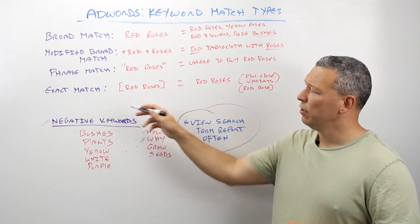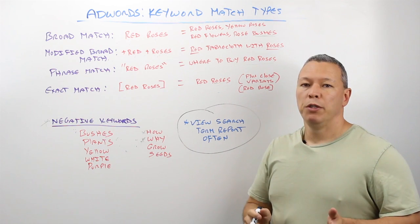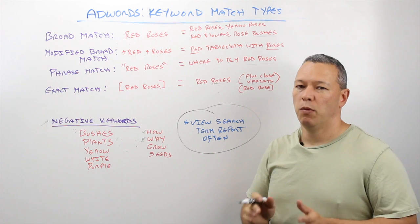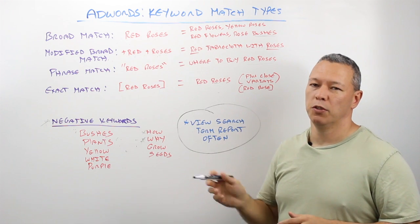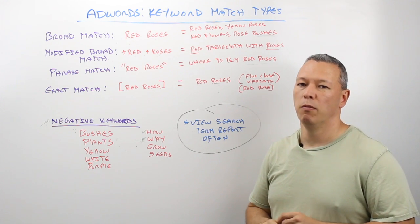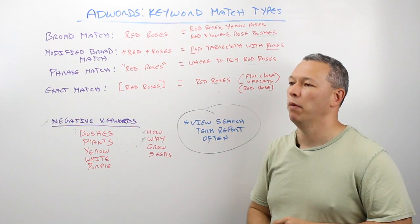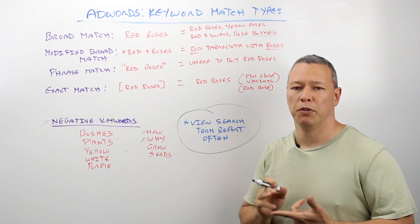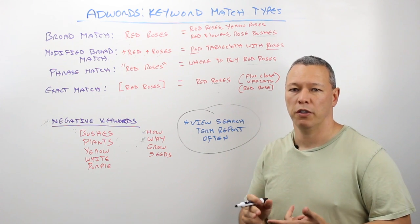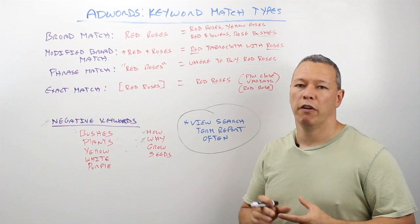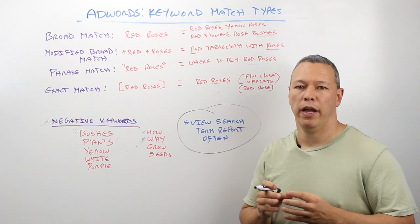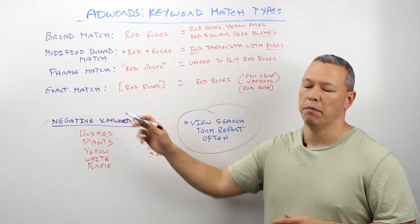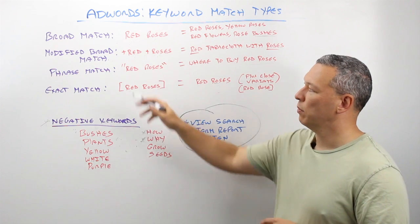So those are the four match types. Broad match is probably one you tend not to want to use because it gives Google too much license to show your ad and many results won't be relevant. The times you'd really want to use broad match are if you're doing research to see what search terms or language people use to find your product or service, or if you're in a very small market or targeting a very small area where there isn't enough search volume to use something like exact match.